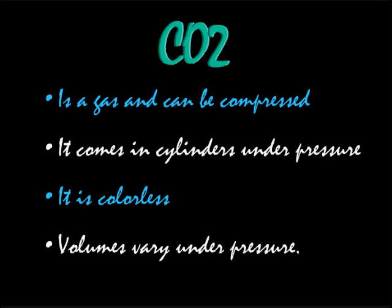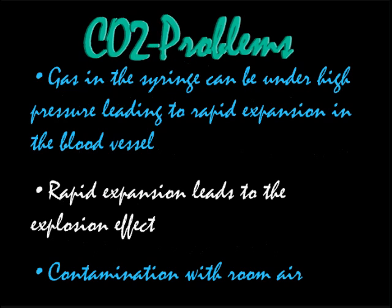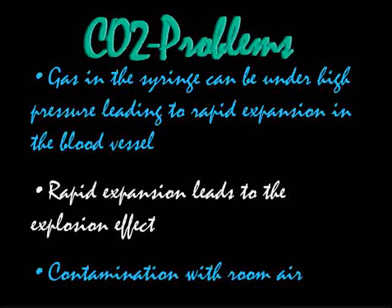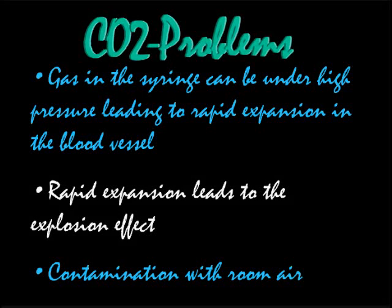What is the problem of carbon dioxide? It is a gas and it can be compressed. It comes in a cylinder under high pressure. It is colorless and volumes will vary under pressure. Gas in the syringe can be compressed, and when it is released through the catheter it can produce rapid expansion. Rapid expansion leads to the explosion effect, which can be painful and can cause dissection of the vessel.